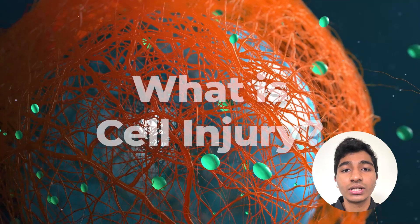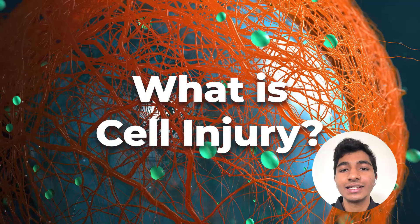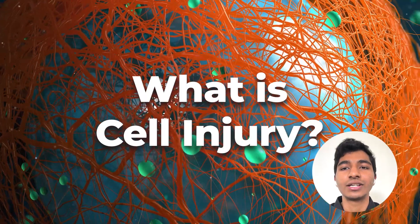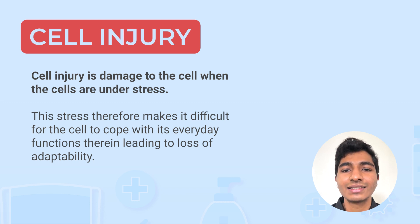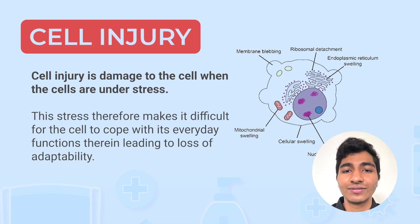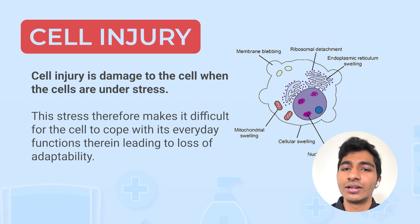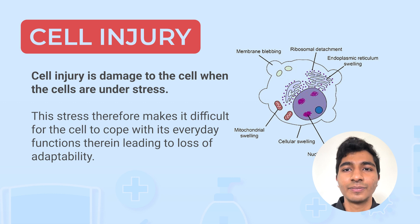So now let us start with what actually is cell injury. Cell injury is nothing but damage to the cell when the cells are under stress. It's very simple and very basic. This stress therefore makes it difficult for the cell to survive and adapt to its surroundings, therefore leading to death, reversible or irreversible changes, as we will see ahead.